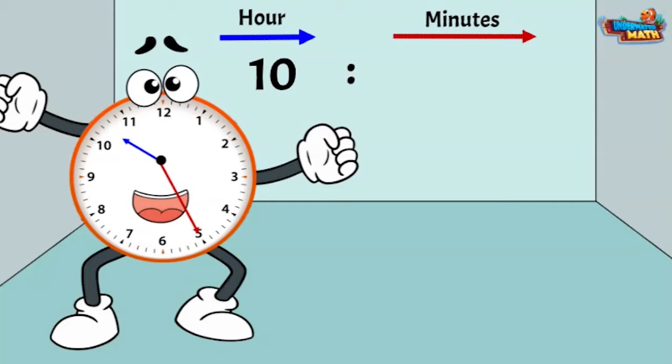We will count by fives until we reach the long hand. Always start at the digit 12 on the clock, then count by 5: 5, 10, 15, 20, 25. The minutes represented are 25. This clock shows 10:25.